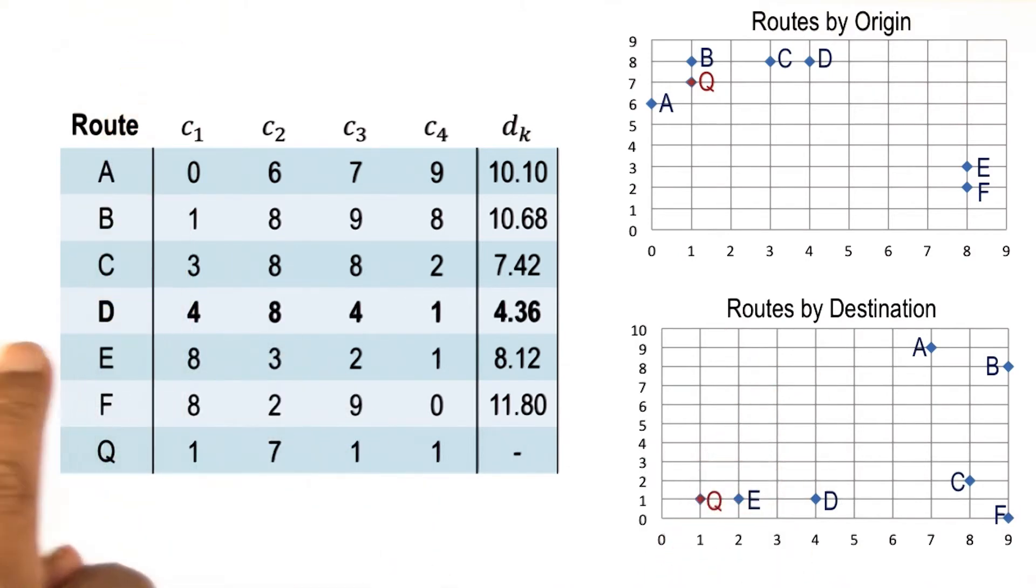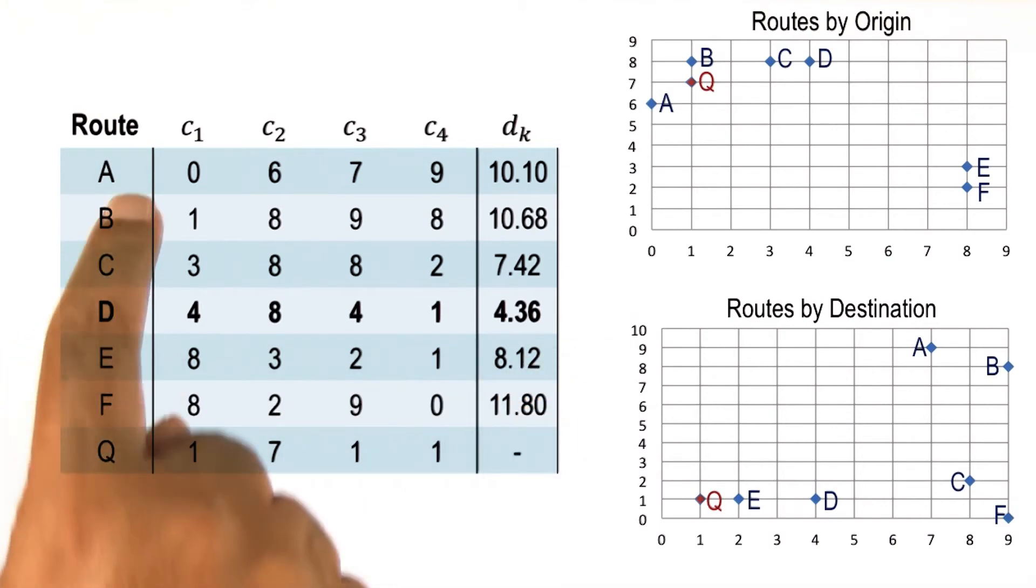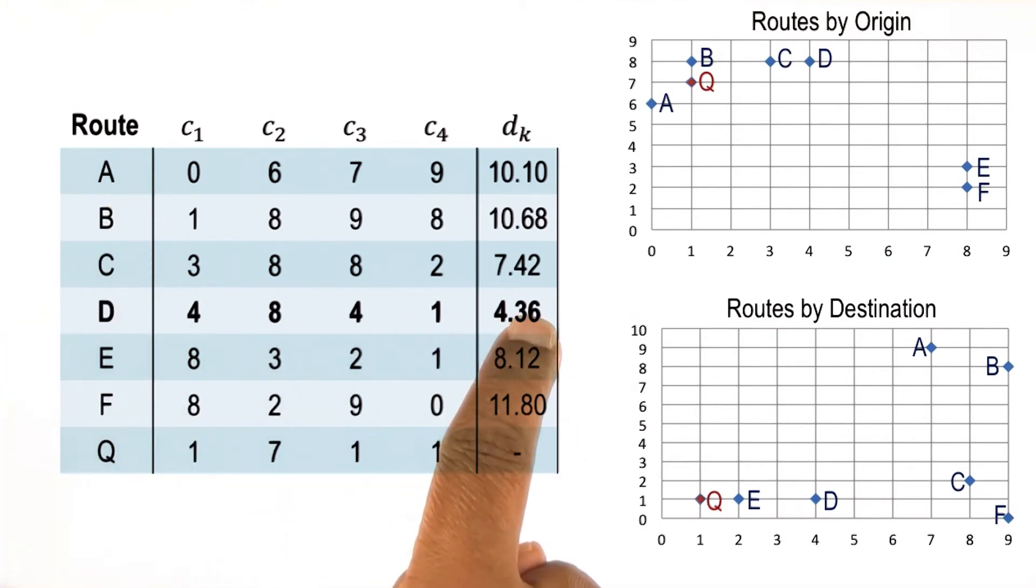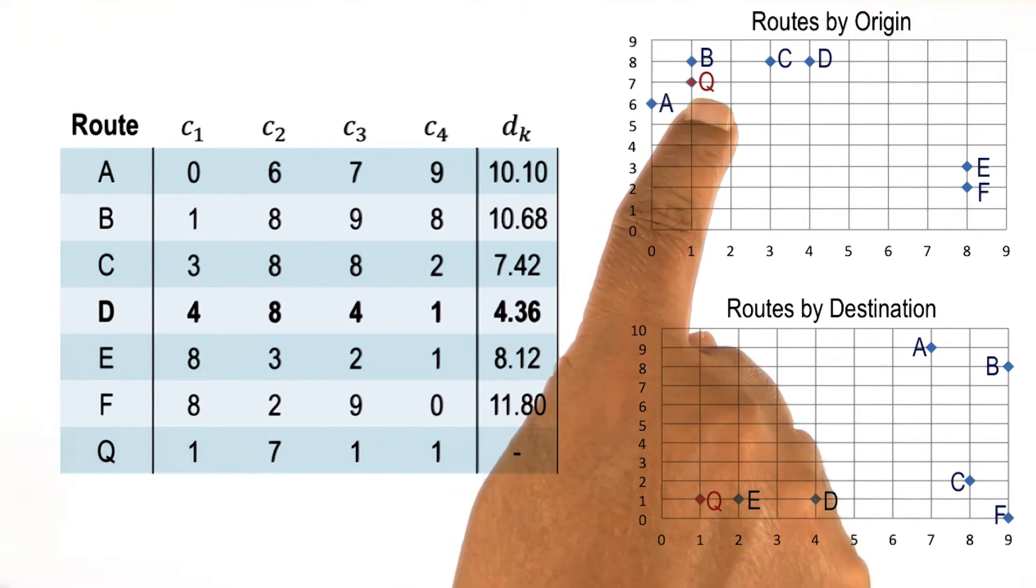Looking at this table, we can very quickly see that D, and not B or E, is the closest case, the most similar case to the new problem Q.